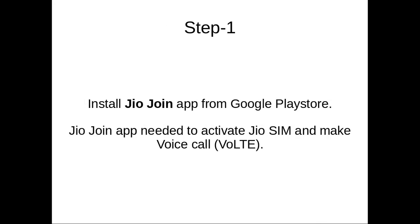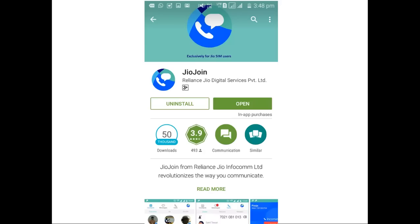Step 1. First we need to install the Jio Join App from Google Play Store. This Jio Join App is needed to activate the Jio SIM and make voice calls. You can download it from the Google Play Store.